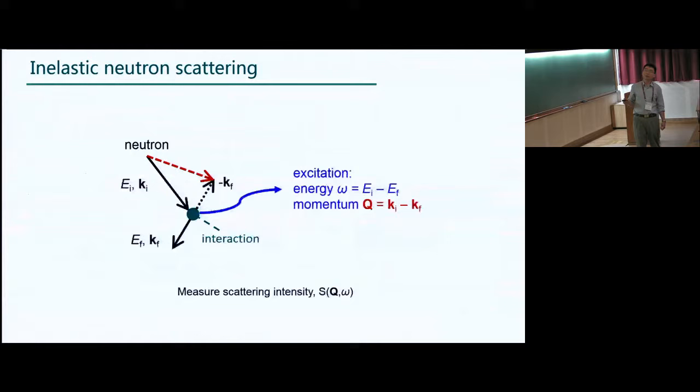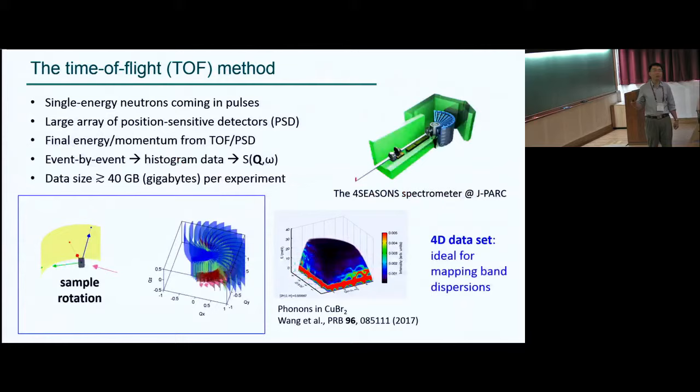And so our experiment was done with inelastic neutron scattering, and I believe Ying-Jie has already given us a very nice tutorial talk last week about it, so I wouldn't go into detail of that. But essentially, at the end of the day, we measure this S(Q,ω) quantity, which can be directly calculated from theory.